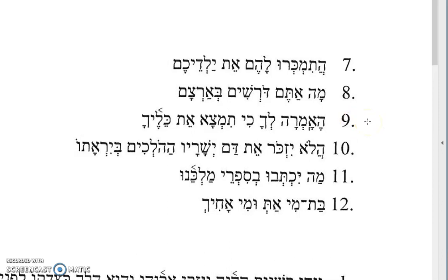Number nine: ha-amra lach ki timtsa et keleha. It begins with the Hey interrogative attached to a verb in the perfect third feminine singular — amra, she said — turning it into a question: did she say to you that you would find your vessels? Timtsa is you will find, and et keleha is your vessels. So: did she say to you that you would find your vessels?